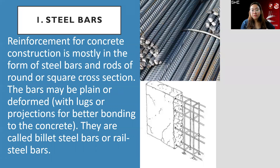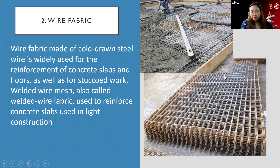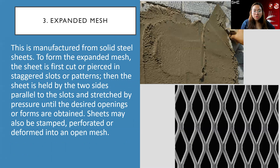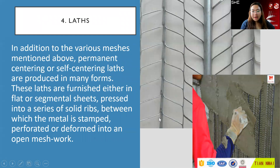For metals used in reinforced concrete, we have steel bars — either plain or deformed (corrugated) bars, called billet steel bars or rail steel. Wire fabric is another option — connected wire mesh typically used for concrete slabs when you don't want to manually tie individual bars. Expanded mesh is placed and then concrete is poured over it, acting as a bonding surface. Metal laths are also used — applied to the surface and then plastered over to serve as reinforcement.